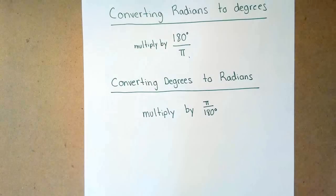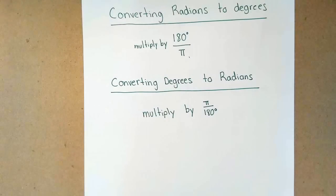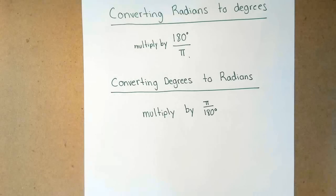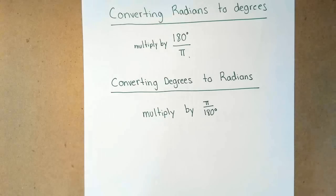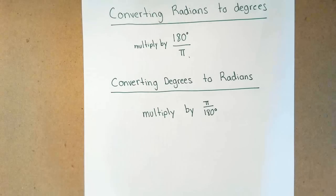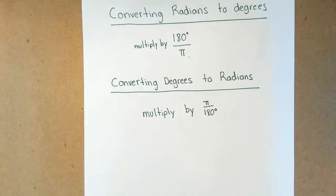Hi everyone. In this video we're going to be working on two topics. The first topic is how to convert from radians to degrees and degrees to radians, and then the next topic is going to be about how to find one positive and one negative coterminal angle. If you're interested in finding coterminal angles, just look at the information and it's going to tell you the minute and second that it begins.